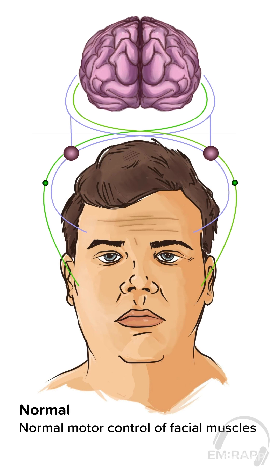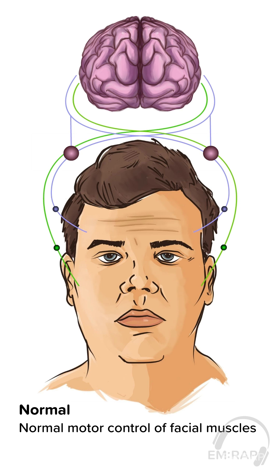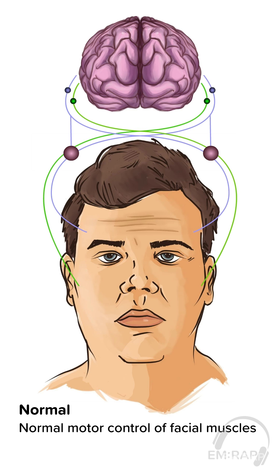Here you can see normal motor control of the facial muscles. The lower face is controlled by the contralateral side of the brain, and the forehead is controlled by both sides of the brain.